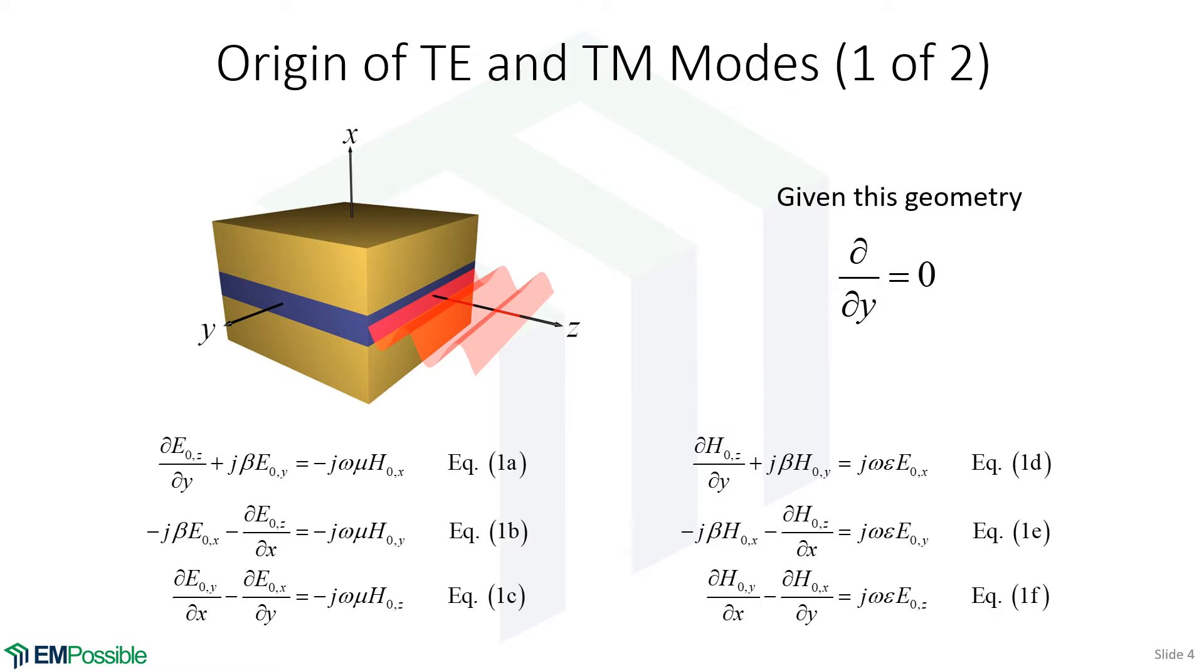So any derivative in the Y direction has to be zero. That lets us go back to our six equations here and cross off any term that has a Y derivative.